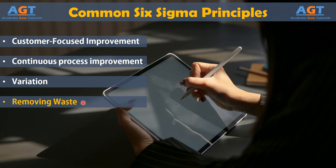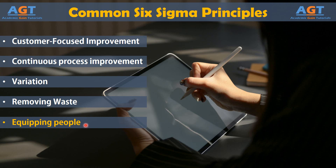Keeping People Equipped: Implementing improved processes is a temporary measure unless organizations equip their employees working with processes to monitor and maintain improvements. In most organizations, process improvement includes a two-pronged approach. First, a process improvement team comprised of project management, methodology experts, and subject matter experts define, plan, and implement improvement. That team then equips the employees who work directly with the process daily to control and manage the process in its improved state.